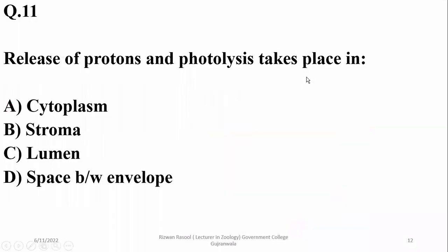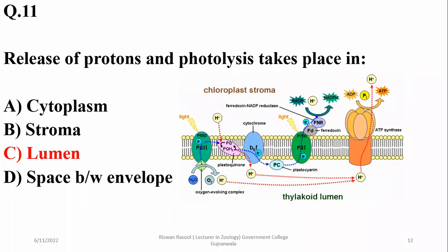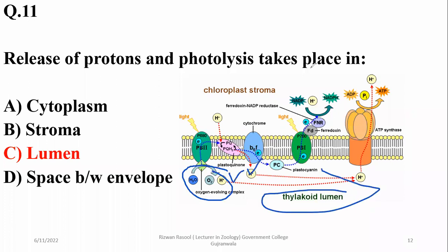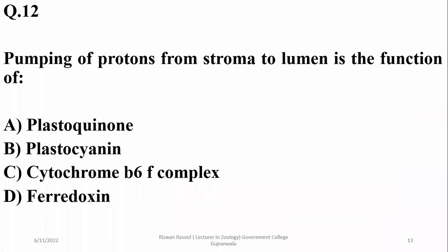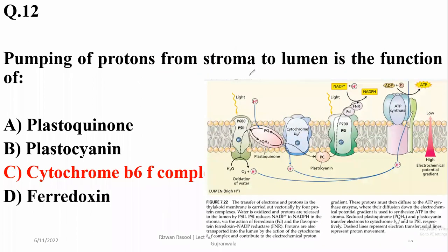Question eleven: Release of protons during photolysis takes place in the lumen of thylakoid — that is, H₂O splitting plus proton production is a thylakoid lumen event. Question twelve: Pumping of protons from stroma to lumen is a function of the cytochrome b6f complex, which is mainly concerned with this proton pumping. Charlie is the right option.